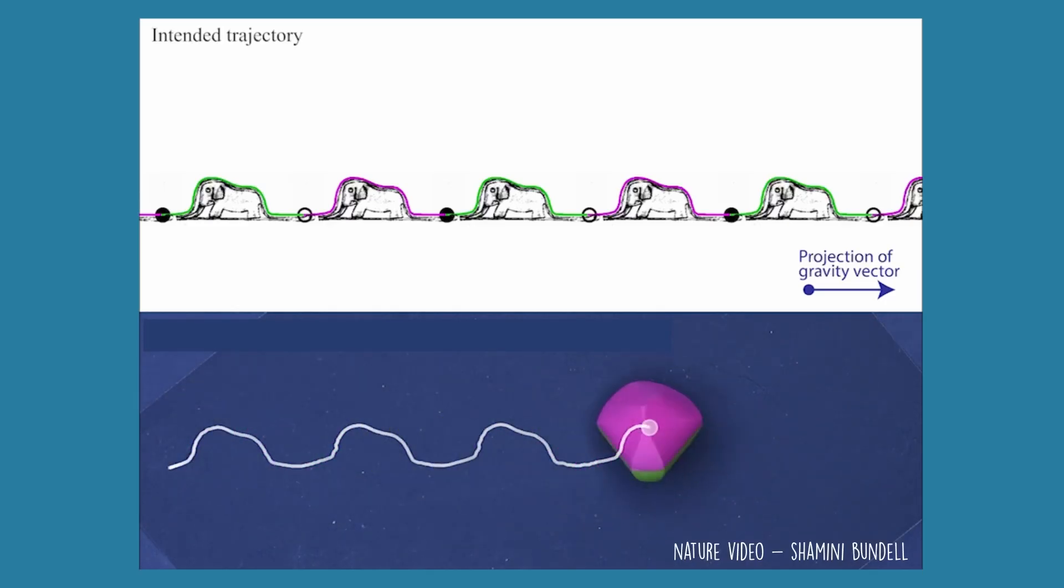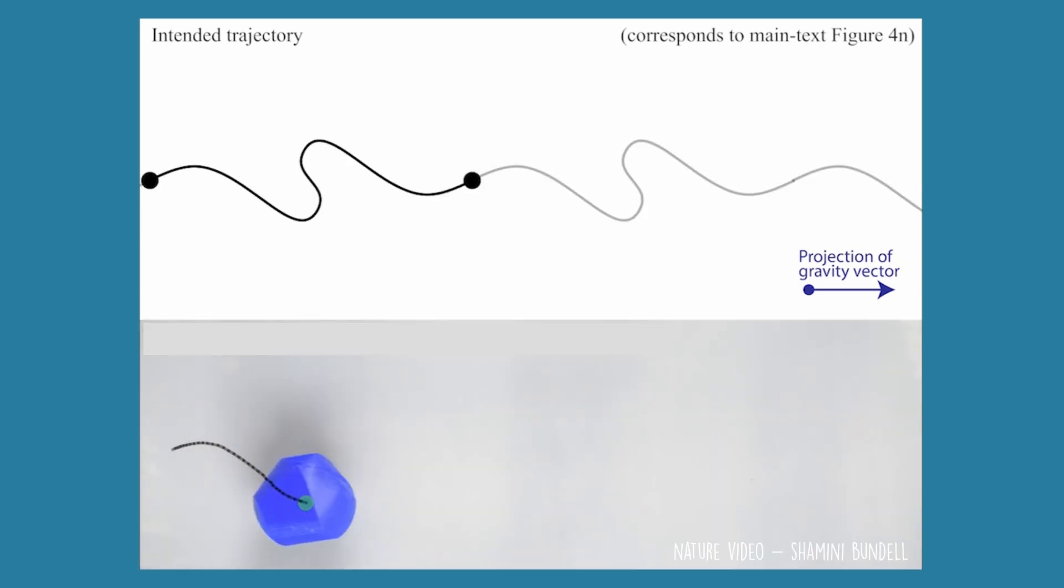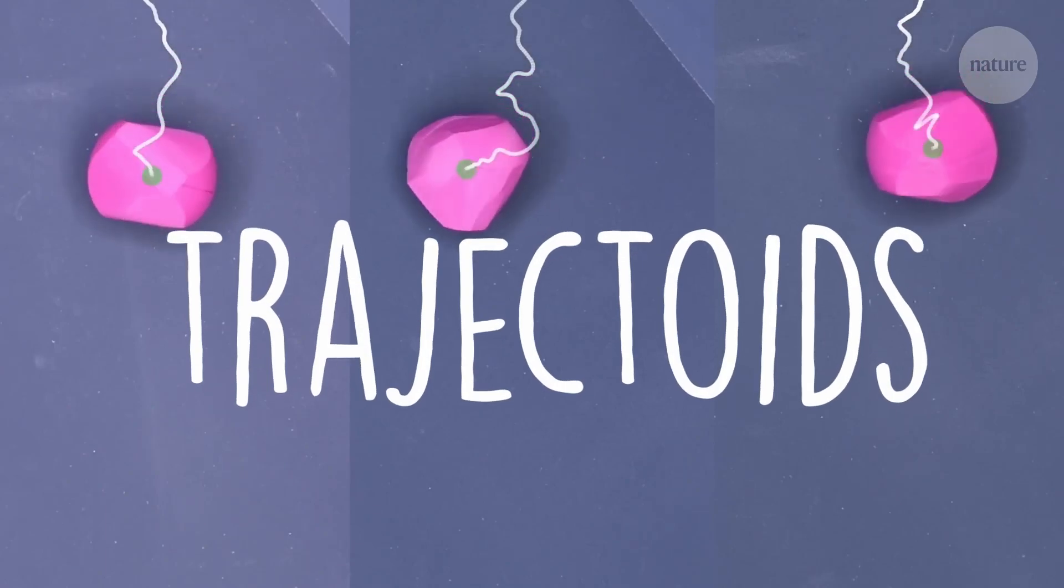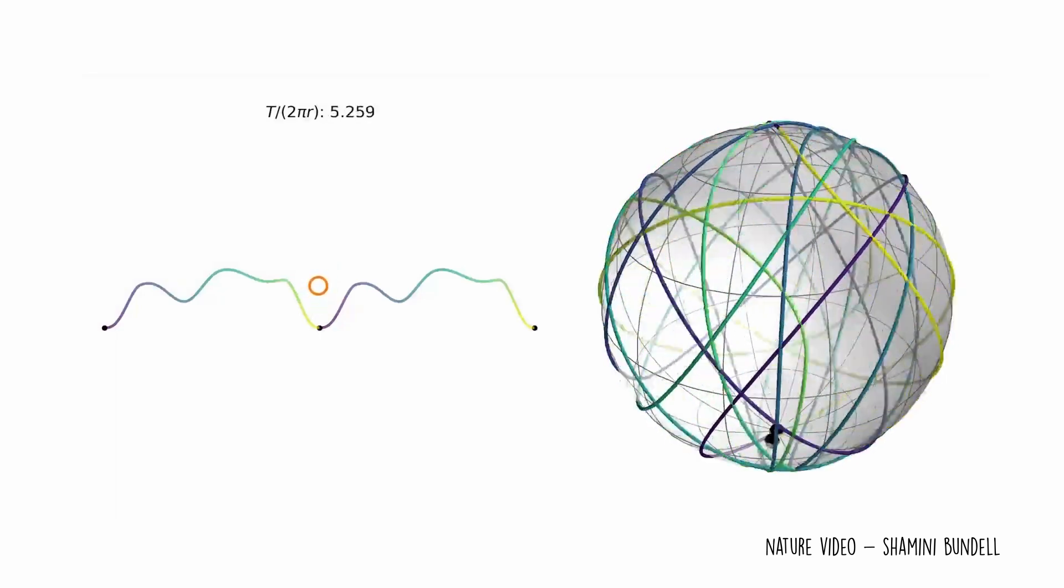In a new discovery, a team of mathematicians have come up with an algorithm that creates a shape that can follow almost any path you can come up with, then 3D print them. They've called them trajectoids. And in a surprising twist, these trajectoids could help physicists solve problems in quantum mechanics.